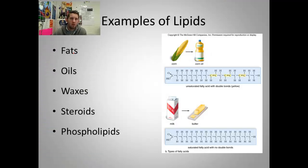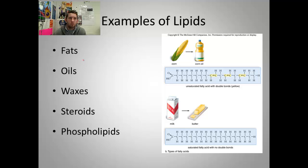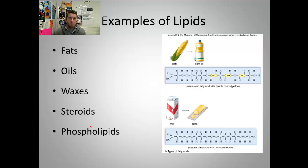How about examples? Fats and oils — saturated fats like animal fats, fats on a steak, blubber, lard; and oils like cooking oil, vegetable oil, peanut oil — all used for insulation and energy storage. All of those carbon-hydrogen bonds are very energetic. We have an unsaturated fat here because of double bonds, so it's liquid. Saturation means solid at room temp. Waxes, steroids, and phospholipids are other examples of lipids.